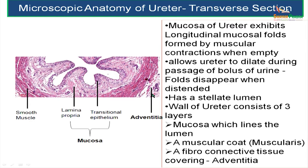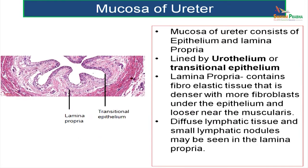Let us now study each of these layers in detail. First, let us take up the mucosa of the ureter. Mucosa consists of epithelium, which is transitional epithelium, or it is called urothelium.